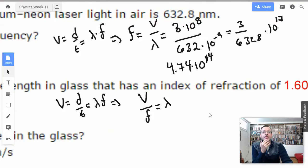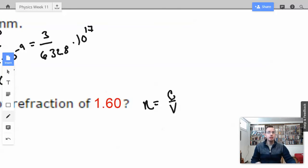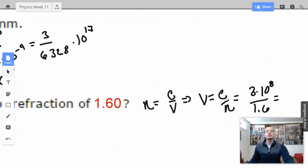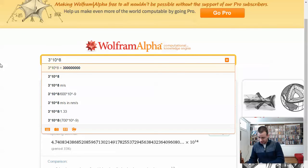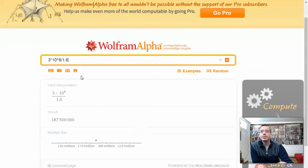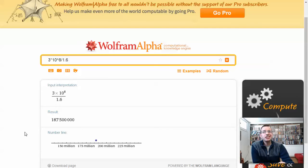First thing I'm going to do is we have an index of refraction here, and what I need is V. So therefore, I'm going to rewrite this as V equals C over N, which equals 3 times 10 to the 8th over 1.6, which is the index of refraction for this guy. 3 times 10 to the 8th divided by 1.6, and I have 1.87 times 10 to the 8th.